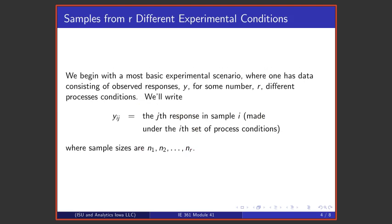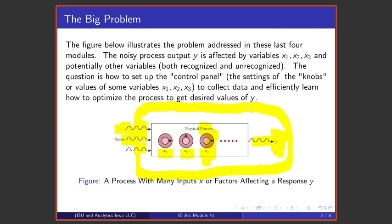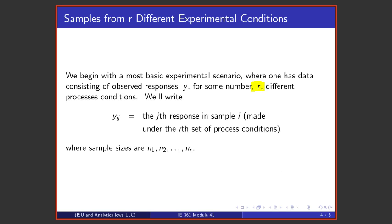We're going to begin with a most basic process scenario where one has data from some number R of different process conditions. So for the time being we're not going to pay so much attention as to exactly where these physical variables x1, x2, x3, and so on might be set beyond recording them. We're not going to talk about the structure of the settings. We're just going to say that somehow we get our different process conditions. And we're going to suppose that the jth response in the ith sample, double subscript things here, is going to be called yij. And we're going to suppose that we've got sample sizes n1, n2, n3, up to nR.